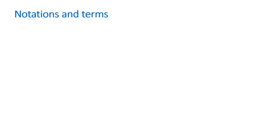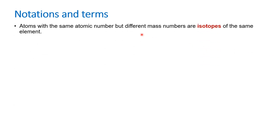First and foremost, the notation and terms that we must know. The first important notation we commonly come across in nuclear reactions is the term isotopes. Isotopes are elements that have the same atomic number but different mass numbers. For example, C-12 and C-14 are isotopes — carbon is the same element, so the atomic number will be the same, but the mass number will be different. In C-12, the mass number is 12; in C-14, the mass number is 14. Such elements are called isotopes.